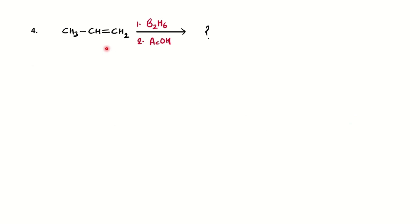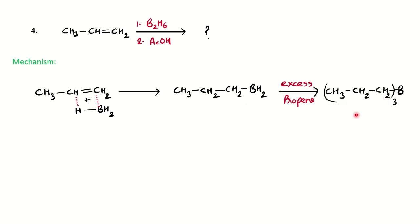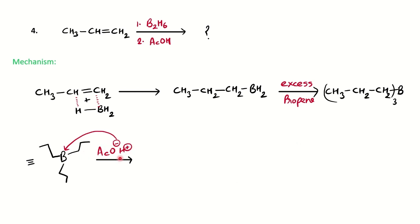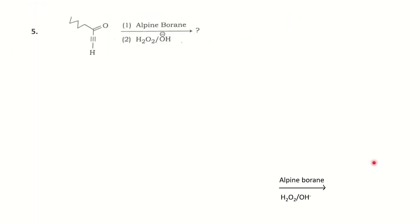You can pause and verify: alkene with diborane and acetic acid gives alkane. The reaction follows Markovnikov's rule and syn addition, forming organoborane where all hydrogens are replaced with organic groups. With propene in the presence of borane and acetic acid, the product is propane. This is the regioselective and stereoselective nature of hydroboration with organoborane formed as intermediate.